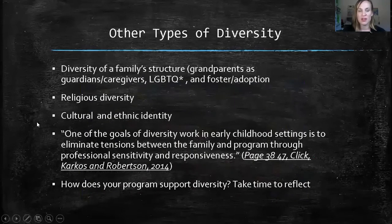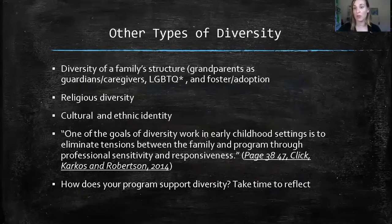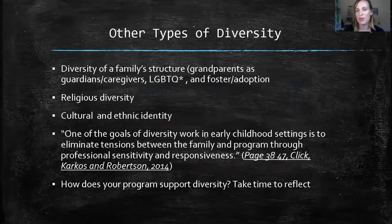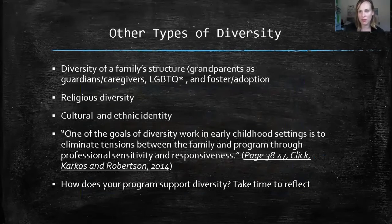There are other types of diversity too. We have diversity of family structure. I've worked with a lot of grandparents who are kinship caregivers — their adult children cannot care for the grandchildren, so grandparents step in as guardians, caregivers, or full-time parents. We also have LGBTQIA families — two moms, two dads — and typically a lot of foster and adoption, as well as single moms, single dads, and single grandparents. We have a wide range of family structures, and this should be reflected in the books and pictures we have and how we welcome and accommodate our families.